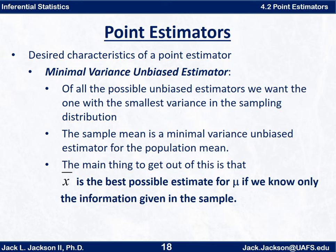What we really want is a minimal variance unbiased estimator — of all possible unbiased estimators, we want the one with the smallest variance in the sampling distribution. The sample mean turns out to be a minimal variance unbiased estimator for the population mean. For this entry-level class, the key takeaways are: we want the estimator to be unbiased (not inherently over- or underestimating), and we prefer the one with the smallest variation. X-bar is the best possible estimate for mu given only sample information.